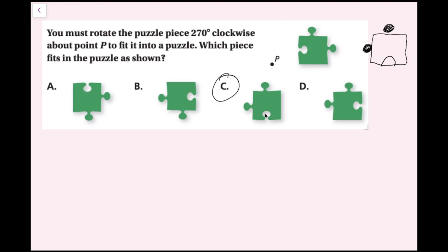That's going to be answer C, because it fits all our criteria — this goes here, this is here, and the indented part is at the bottom. If you used 90 degrees counterclockwise instead, you'd get the same result. Either way, choice C is the correct puzzle piece.